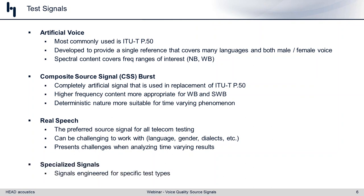The fourth type of test signal covers real corner case situations where we need highly specialized signals. These are useful but not commonly used — some oddball type specialized signals for those particular situations.